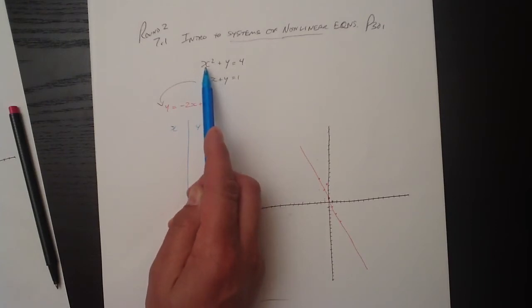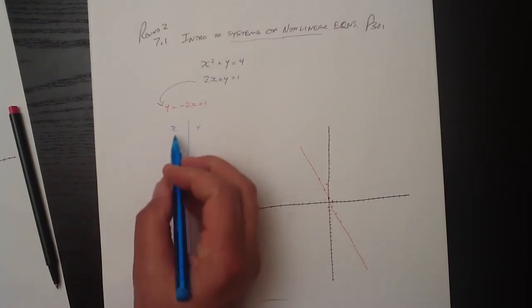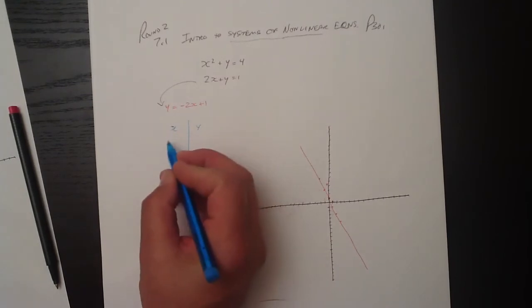whether it's a negative number or a positive number, x squared will end up the same. For instance, if x is negative 2, then x squared is 4. But if x is 2, x squared is 4. So when I write in the x's here, it's going to be plus or minus.